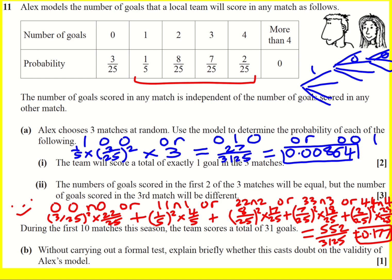One last little bit. We're told that during the first 10 matches this season, the team scores a total of 31 goals. So that means the mean will be 31 divided by 10 is going to be 3.1. Without carrying out a formal test, explain briefly whether this casts doubt on the validity of Alex's model. Well, we can see there's significant probabilities around 0, 1, and 2 here. There's 1 at 3, but the mean of the model is definitely going to be less than 3. There's no way that this is going to counteract the 3 over 25 for the 0.